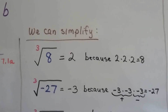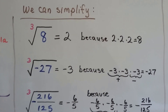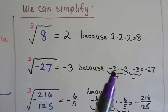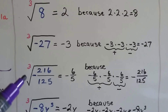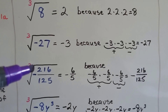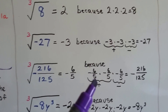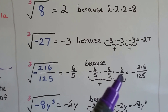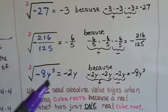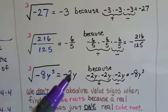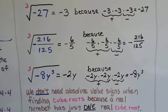We can simplify cube roots. The cube root of 8 is 2 because 2 times 2 times 2 is 8. The cube root of negative 27 is negative 3 because negative 3 times negative 3 makes a positive 9, times negative 3 makes negative 27. And the cube root of the rational negative 216 over 125 equals negative 6 fifths because when we multiply two of them together we get a positive, and when we multiply the third one we get a negative. The cube root of negative 8y cubed is negative 2y because when we multiply two of them together we get a positive, and then when we multiply three of them together we get negative 8y cubed.